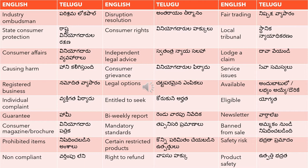'Individual complaint' means 'vyaktigata viriyad' — 'vyaktigata' means individual. 'Entitled to seek' means 'korukune arhat' — for example, 'I am entitled to seek this redress' would be 'naku korukune arhat undi'. 'Eligible' means 'yogyata'. 'Guarantee' means 'haami'.